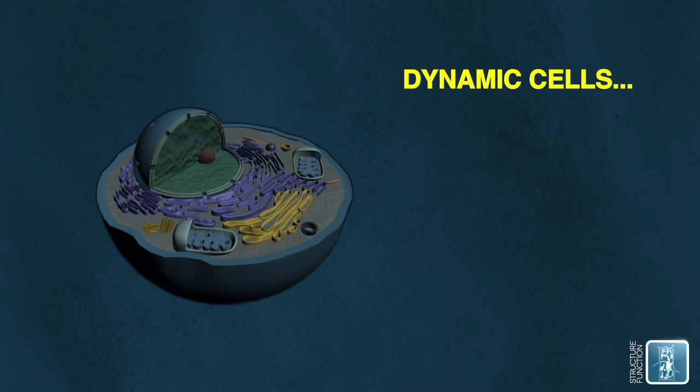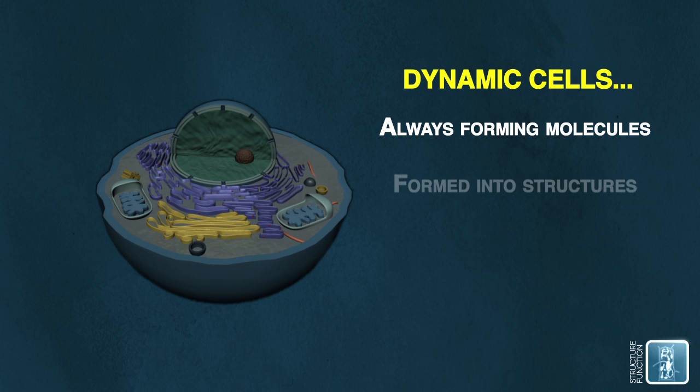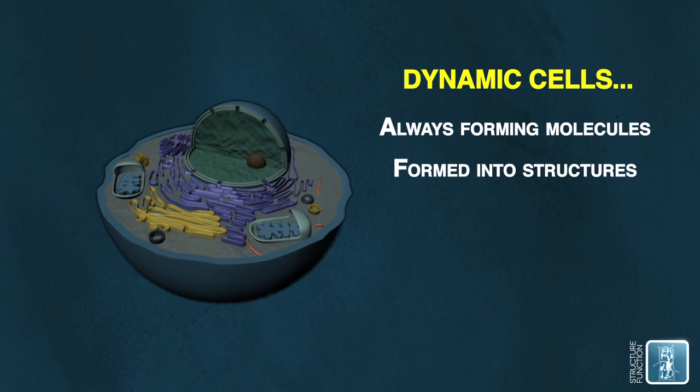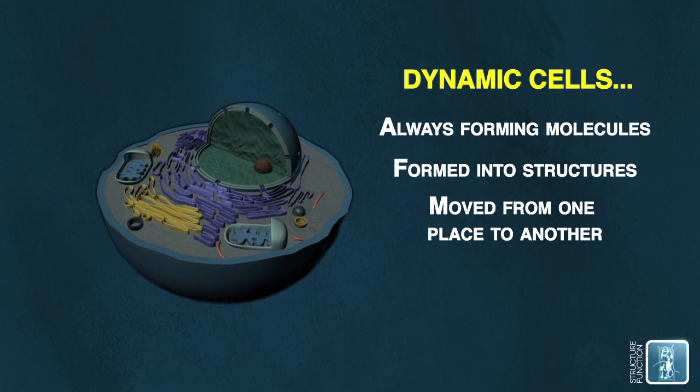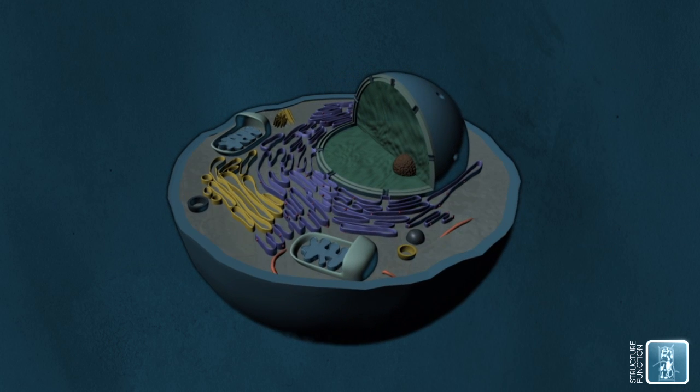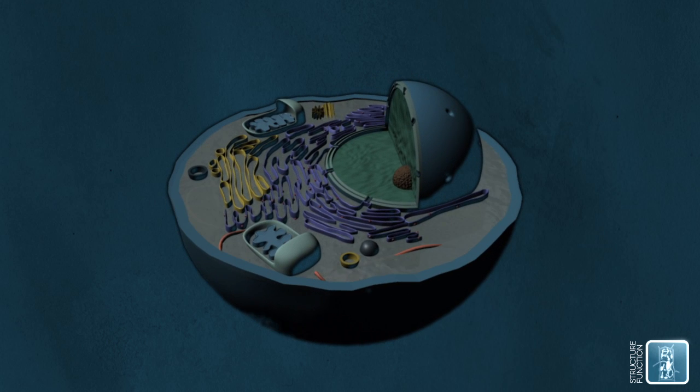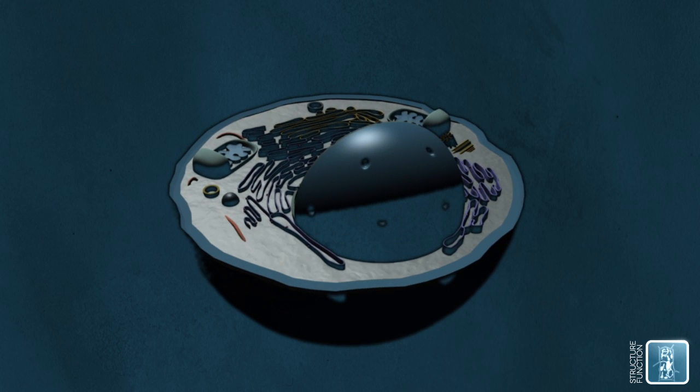And we find the cell is very dynamic in the sense that the molecules are always being made in these various places, they're being constructed into structures, they're being taken apart, they're being moved from one place to another, so they're very dynamic. And this whole system then is what we might describe as characteristic of the living state. So these individual cells actually behave like a living organism, they behave like the living state.